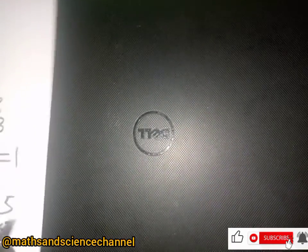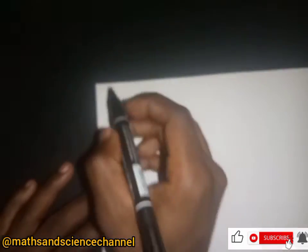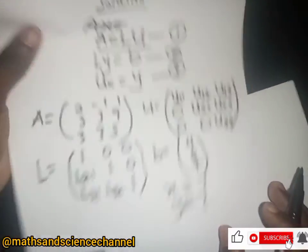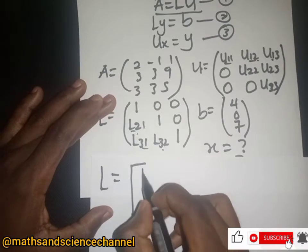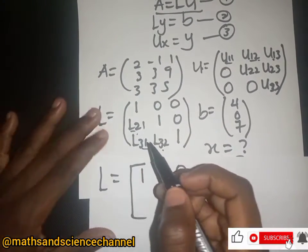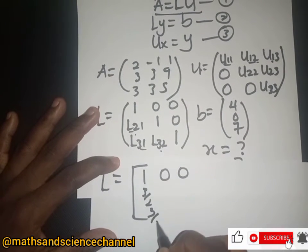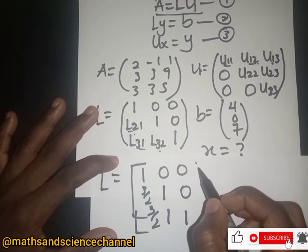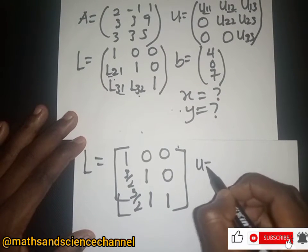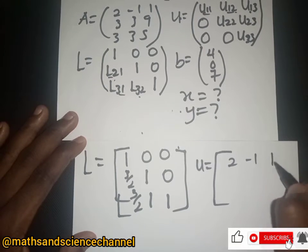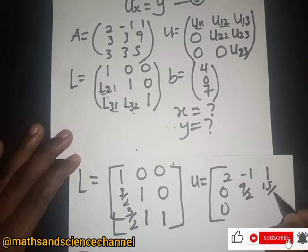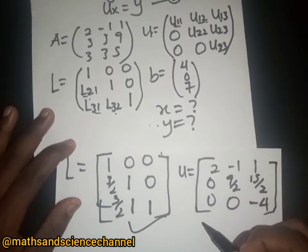We can now write the values of L and U. L is the matrix: 1, 0, 0; 3/2, 1, 0; 3/2, 1, 1. U is the matrix: 2, -1, 1; 0, 9/2, 15/2; 0, 0, -4. We have found our L and U matrices.